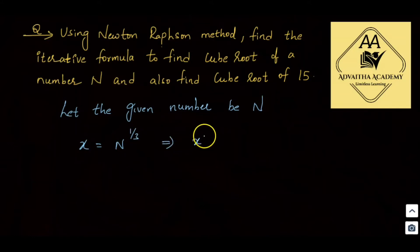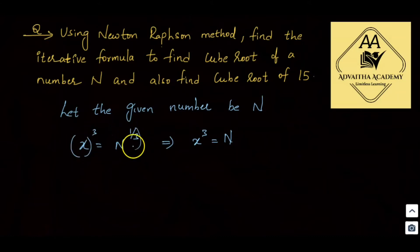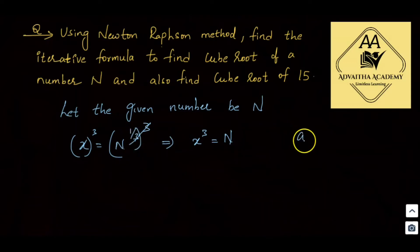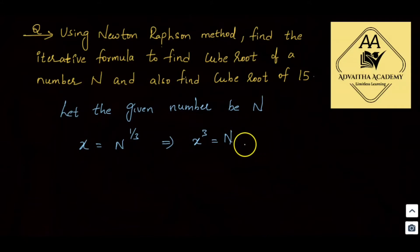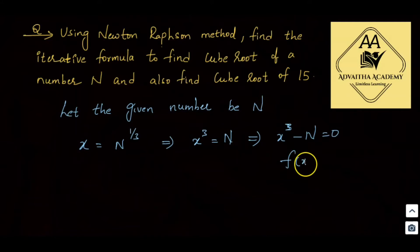So if the cube root of x is equal to n, then x cubed is equal to n, which means x cubed minus n is equal to zero. Here we use the f of x equal to zero formula. So f of x is equal to x cubed minus n.